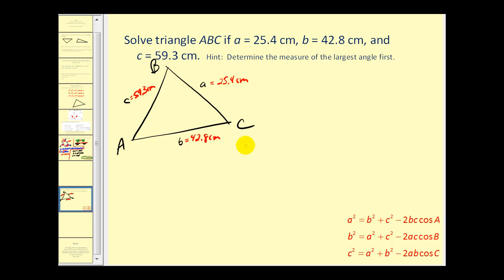We have to decide which angle we want to find first. It's recommended that we find the largest angle first to avoid any possible complications with the ambiguous case of the law of sines. Remember the largest angle is opposite the largest side. Let's find the measure of angle C first. We're going to use this form of the law of cosines. C squared must equal A squared plus B squared minus 2 times A times B times cosine C.